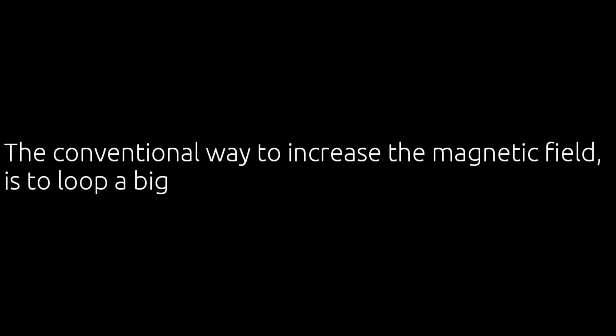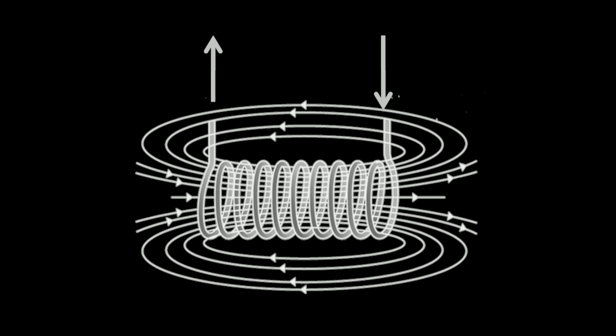The conventional way to increase the magnetic field is to loop a length of wire over and over again. That way you end up making a coil, which is an electromagnet.